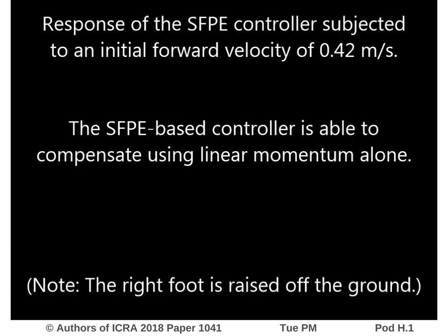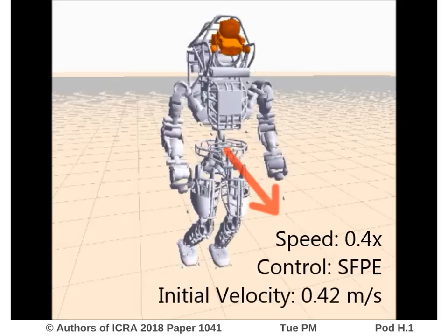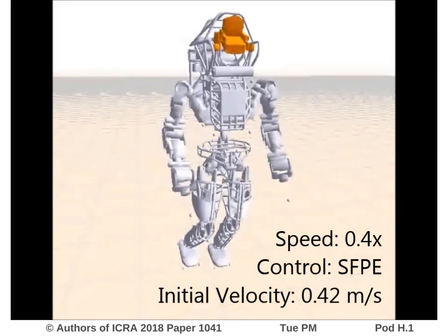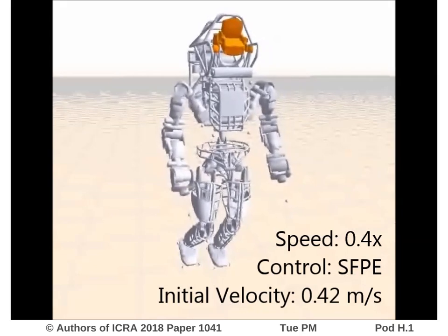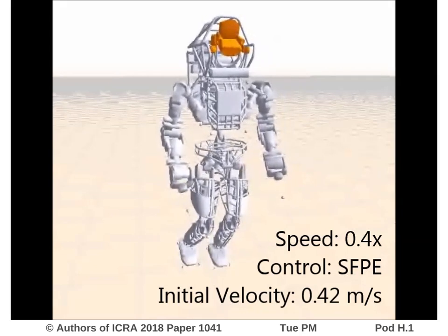To simulate a disturbance such as a push, we have initialized the robot with a pelvis velocity of 42 cm per second and applied an SFPE feedback loop to generate linear momentum control inputs for a whole body controller. As you can see, the robot is able to compensate for the disturbance using linear momentum alone.